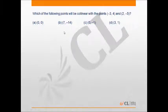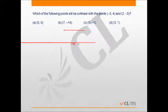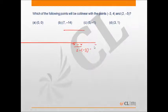To find the slope of the line passing through the two given points: it will be (y2 - y1)/(x2 - x1), that is (-5 - 4) upon (2 - (-3)), which is -9/5.